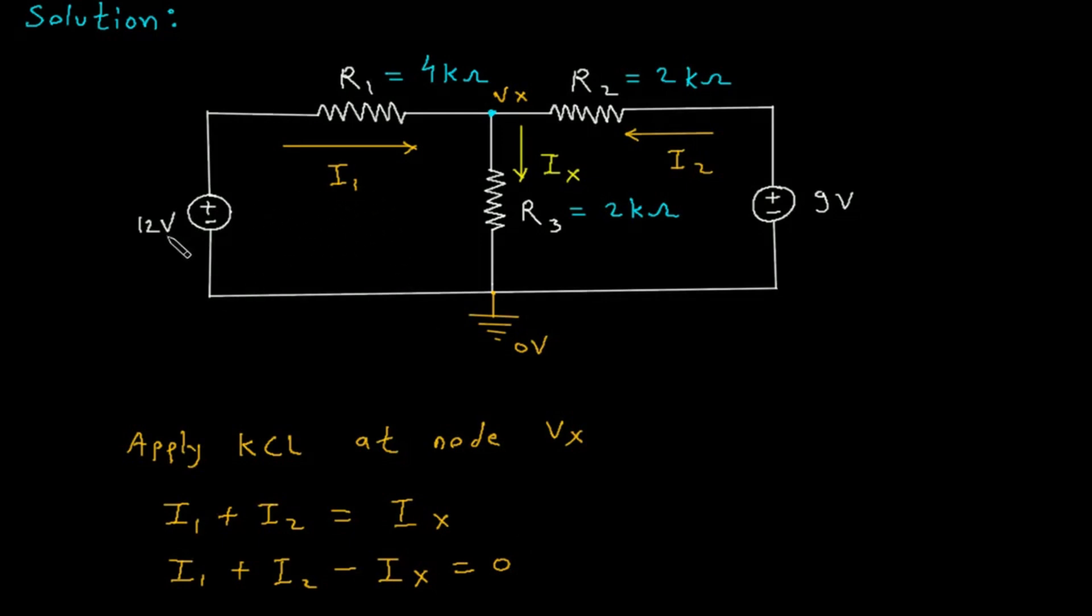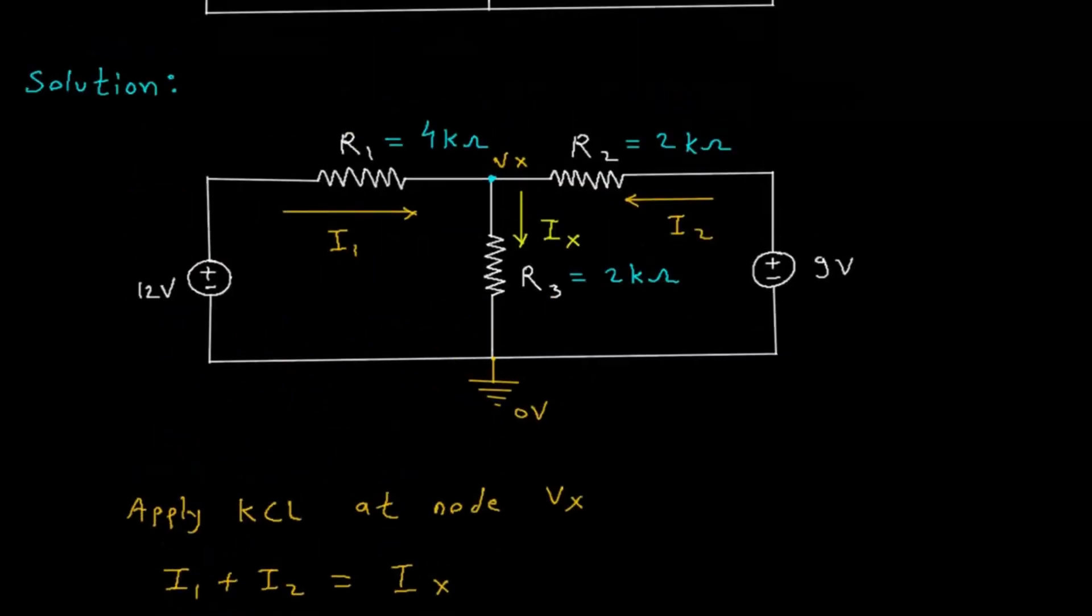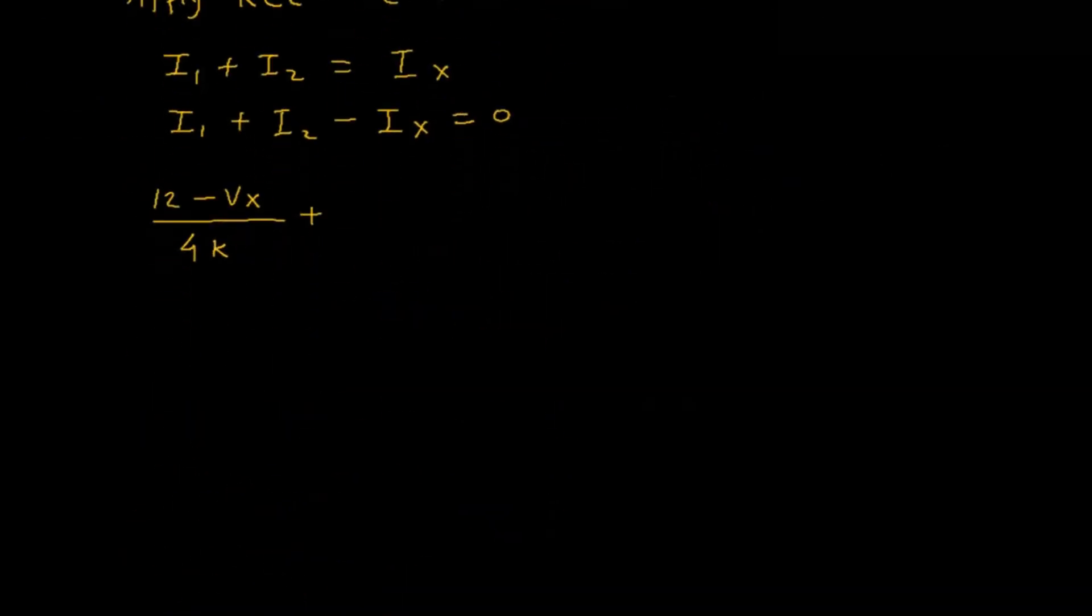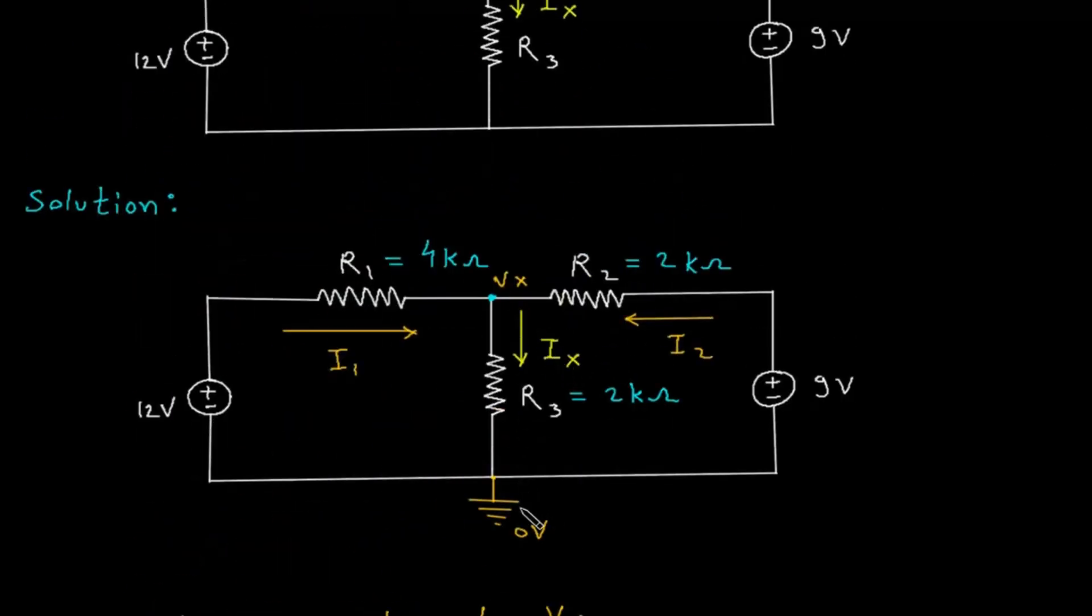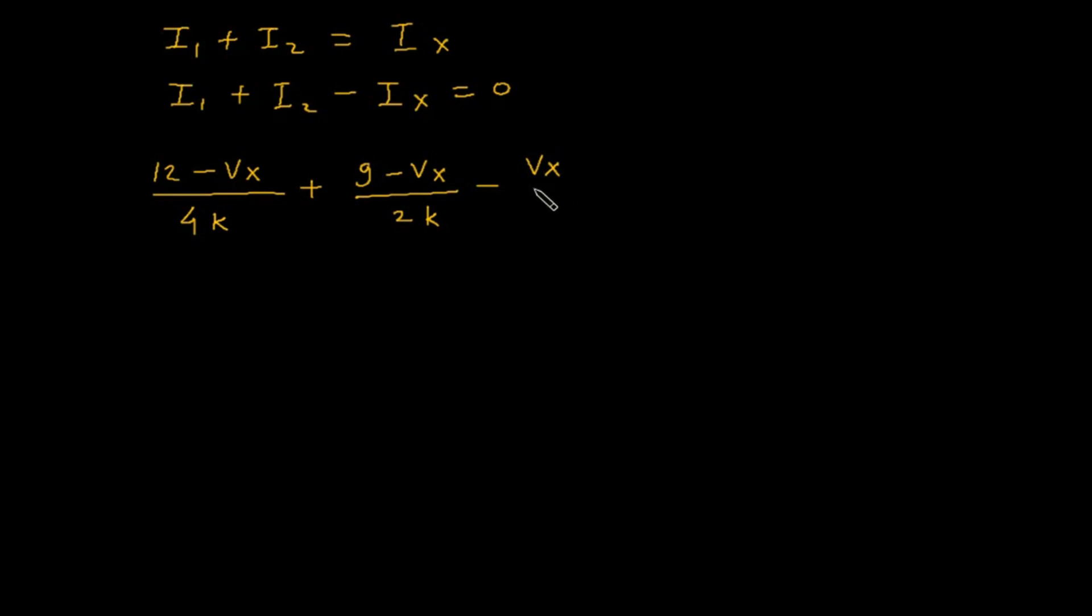Now this I1 is equal to (12 - Vx) / 4k, plus I2. This I2 is (9 - Vx) / 2k, minus Ix. Ix is (Vx - 0) / 2k, which equals 0.